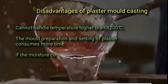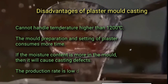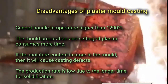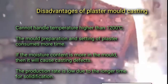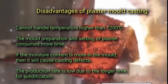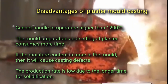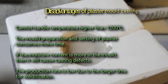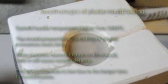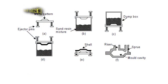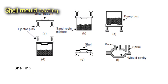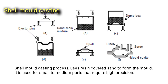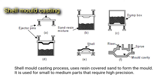Disadvantages of plaster mold casting: cannot handle temperatures higher than 1200 degrees Celsius, mold preparation and setting of plaster consumes more time, if the moisture content is more in the mold it will cause casting defects, and the production rate is low due to the longer time for solidification.